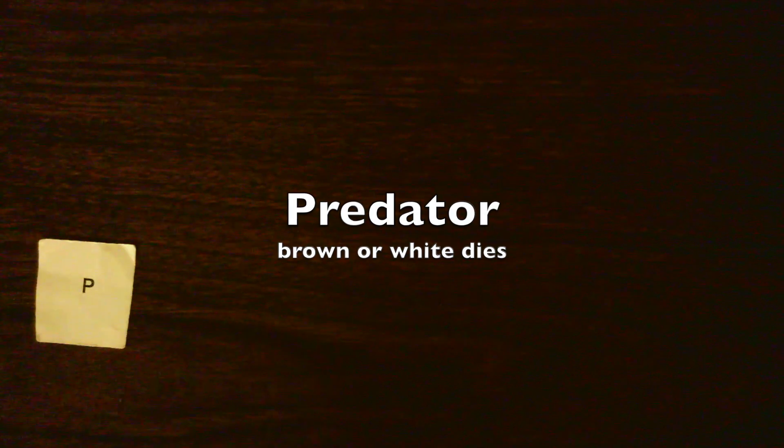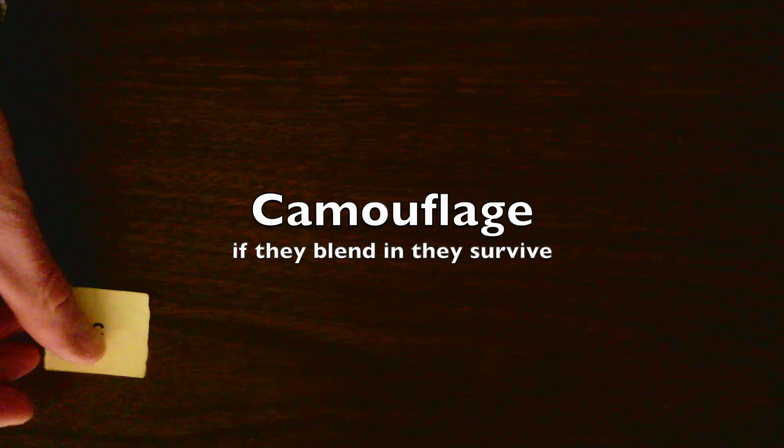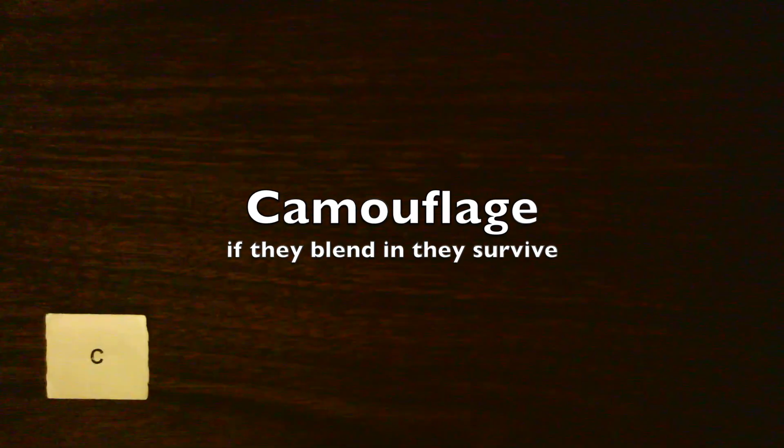If you see a P, it does not matter if it's brown or if it's white, the predator will eat it. But if you see a C, this means that they blend into their environment and the predators cannot see them and they will survive.